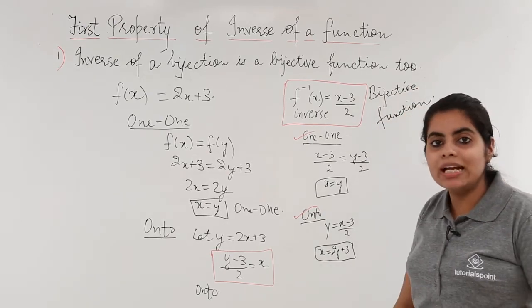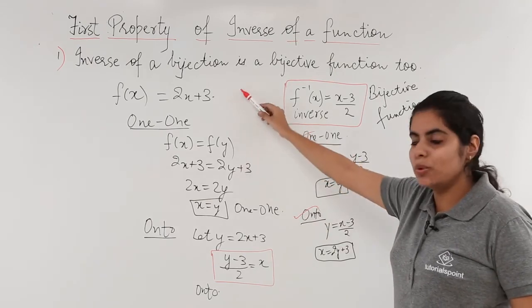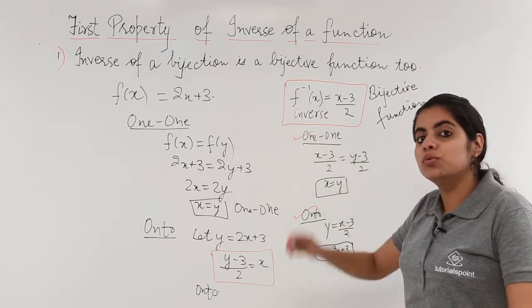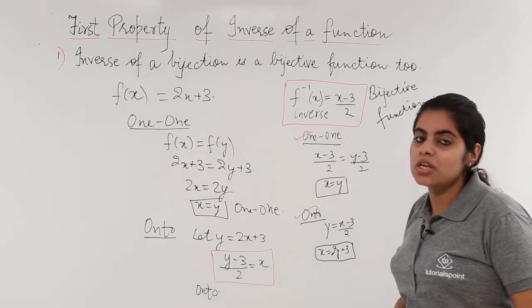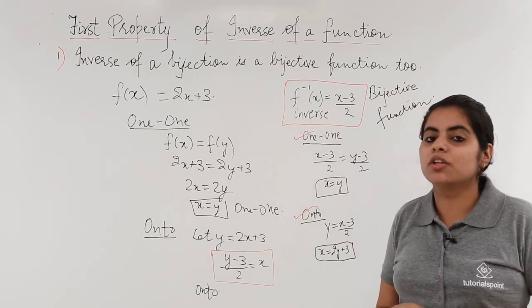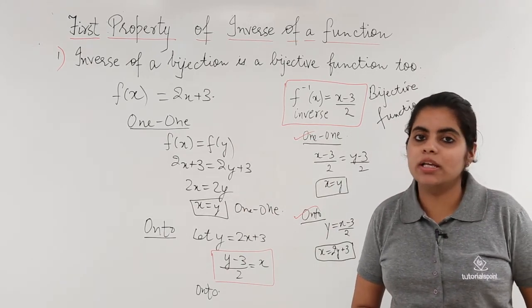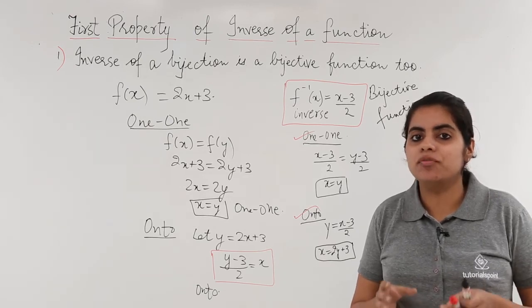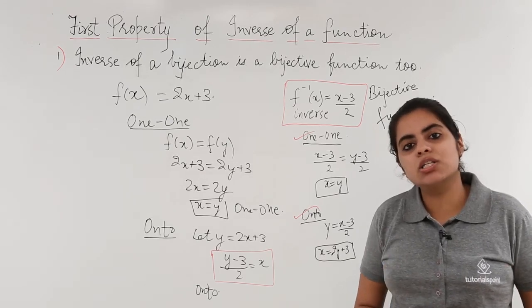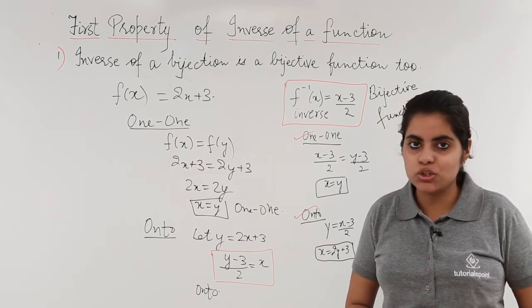Our property said what? That you take a function which is bijective, you find the inverse, it will also be bijective. So in this video we saw the first property based on inverse of function: that if you take the inverse of a bijective function, it is a bijective function too.